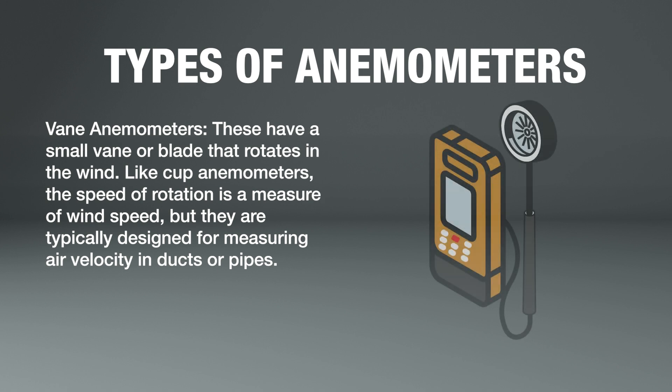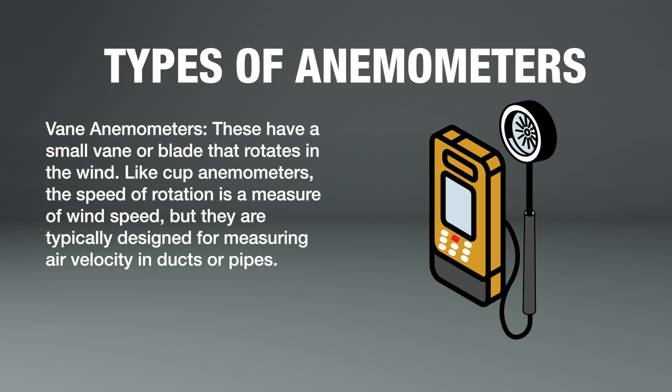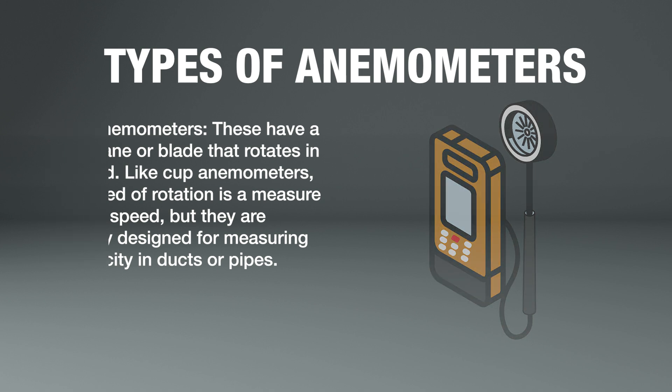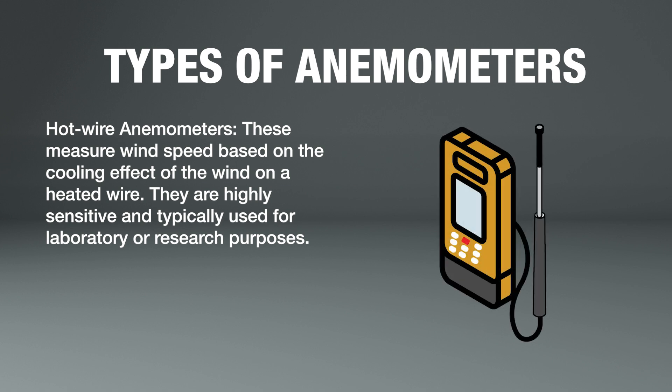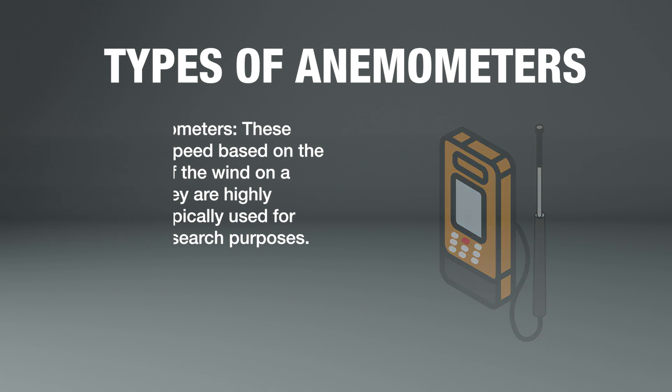Vane anemometers have a small vane or blade that rotates in the wind. Like cup anemometers, the speed of rotation is a measure of wind speed, but they are typically designed for measuring air velocity in ducts or pipes. Hotwire anemometers measure wind speed based on the cooling effect of the wind on a heated wire. They are highly sensitive and typically used for laboratory or research purposes.